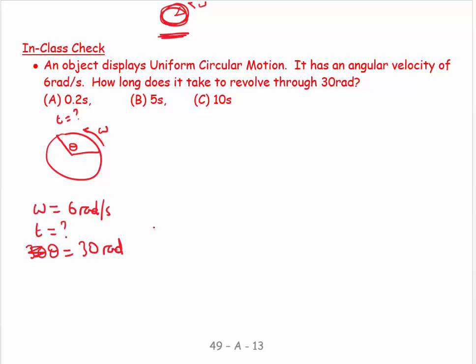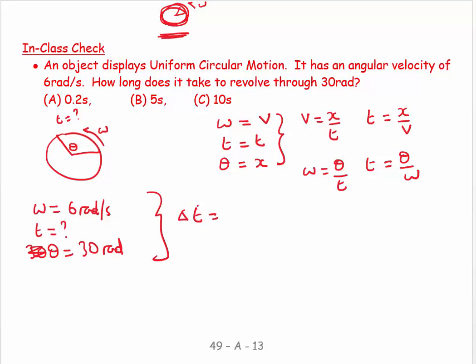And my advice when you're like that is to say, what's the analogy? And the analogy is, well, omega is like velocity, and time is like time, and theta is like displacement. And if I look on this side, I'd say, oh, well, v equals x over t, so t is equal to x over v. And by the same token, you can say omega is equal to theta over t, so t is equal to theta over omega. So if I come down here, I'll go t, delta t I prefer, because it's a time interval. Is equal to theta over omega, which equals theta, which is 30 over omega, which is 6, which is 5 seconds.